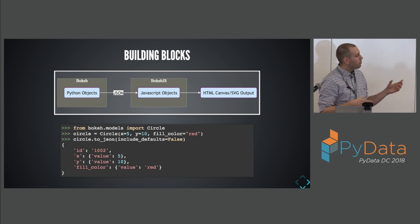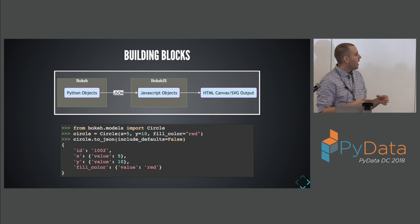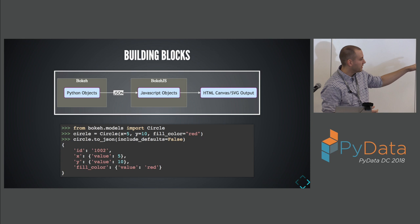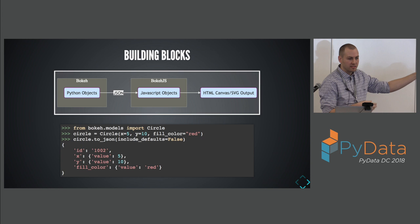Bokeh primitives are called glyphs — they're simple Python objects with a bunch of attributes you set. On the bottom is an example of our circle glyph. When we serialize it to JSON, it really is just a simple JSON object. Bokeh visualizations are collections of these Python objects, serialized to JSON and fed to a client library called BokehJS that knows how to consume and rebuild all of these objects in JavaScript and output them as canvas or SVG.